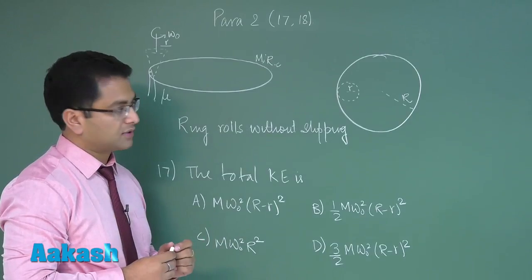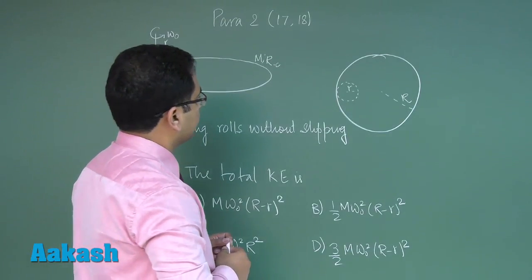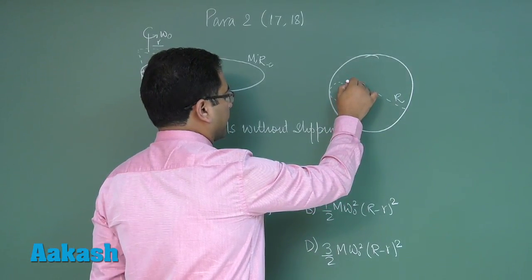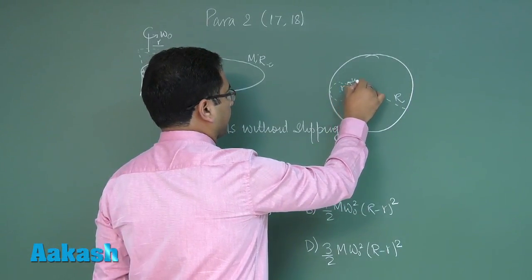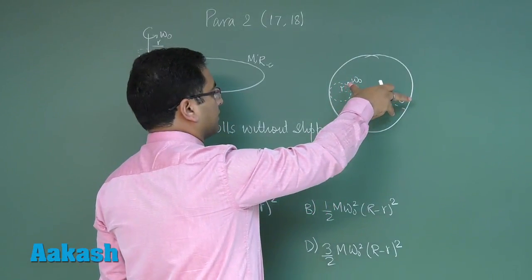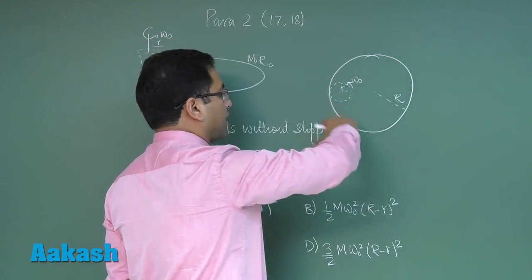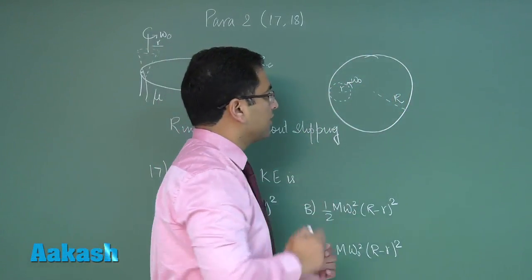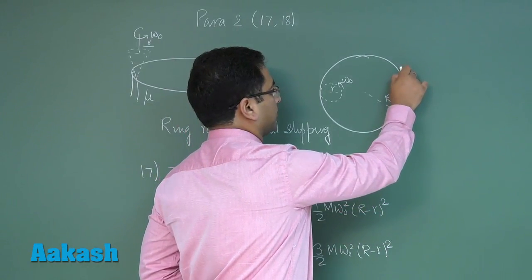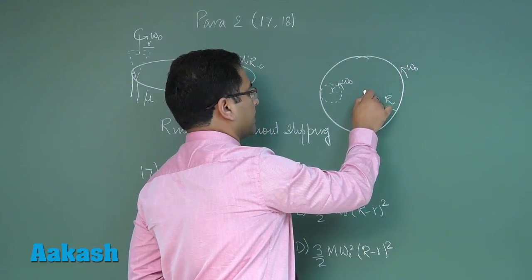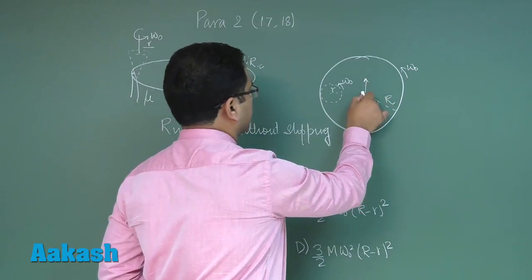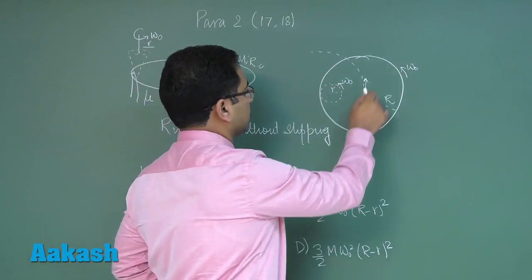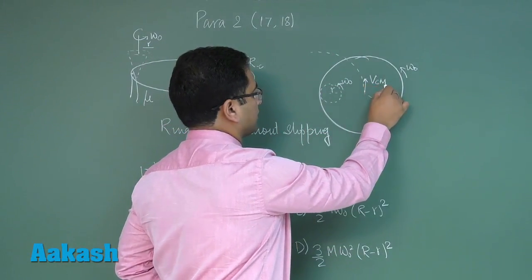The first point is for the finger the angular velocity is omega naught, while you could see that the ring also rotates around its axis which passes through the center of mass with the same angular velocity omega naught. But apart from that, the ring also makes a circular motion or rather the center of the ring goes in a circular motion and let's say the velocity of the center of mass is VCM.